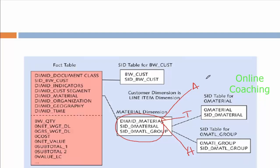Can you see here, I have a SID 0 material. It is connected to SID 0 material here. I have a SID 0 material group. It is connected to SID 0 material group. The tables will be divided — that is the use of the SID table. Every single info object you're creating, there will be one SID table created. The data will be divided and then it will connect to the data. This is the extended star schema — we'll come to that part later.